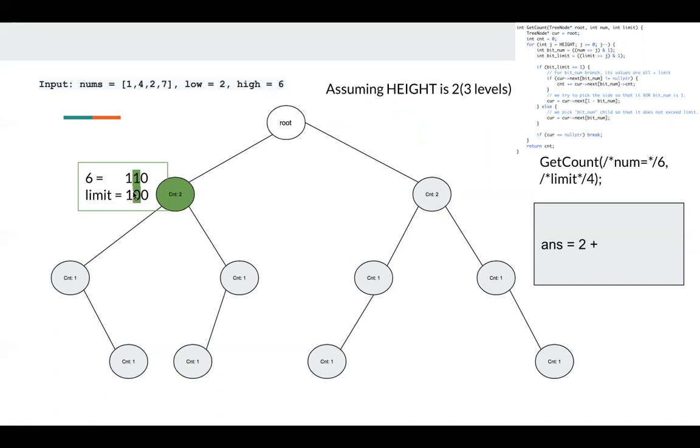Next, we know the bit of limit is 0. Now we go to the else branch. Then we just go to the bitNum branch. BitNum is 1, so we go to the right part.